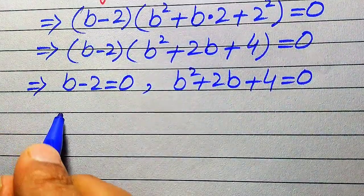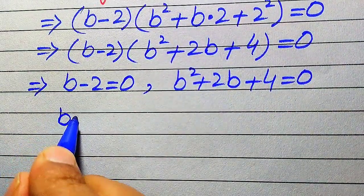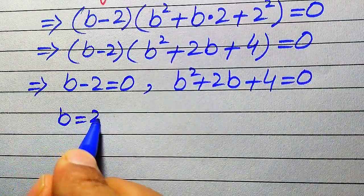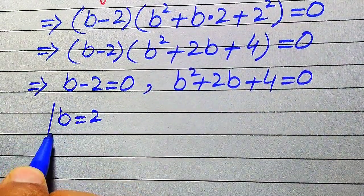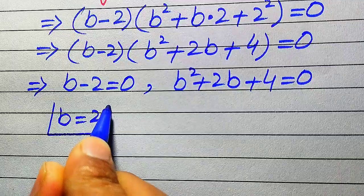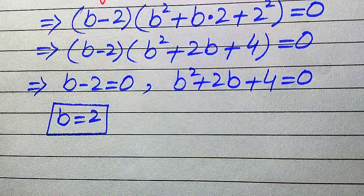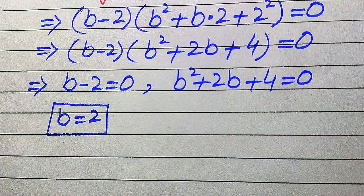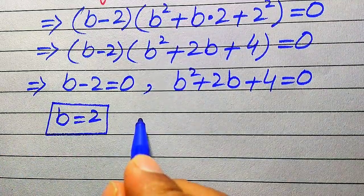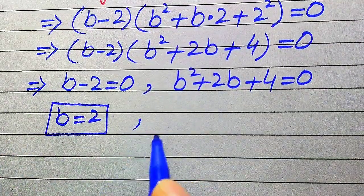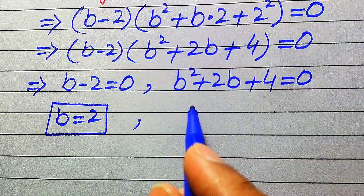From the first case, we easily get the value of b is equals to 2. So this is the first real root of the given equation. Now in order to find the other roots, we need to solve the quadratic equation b squared plus 2b plus 4 equals to 0.